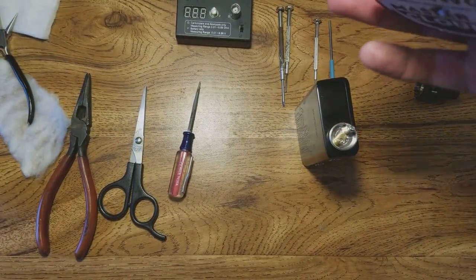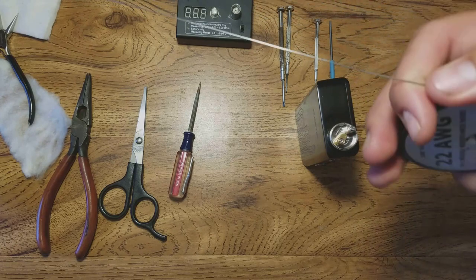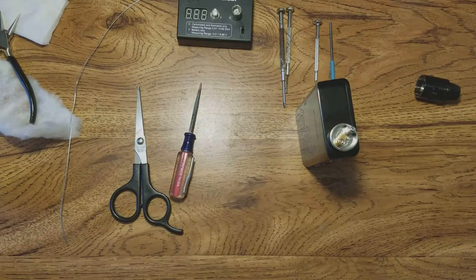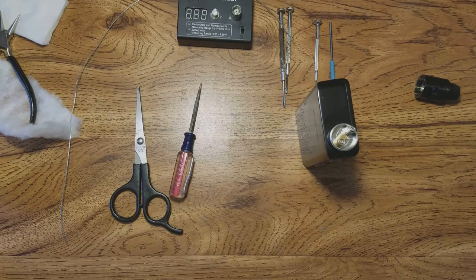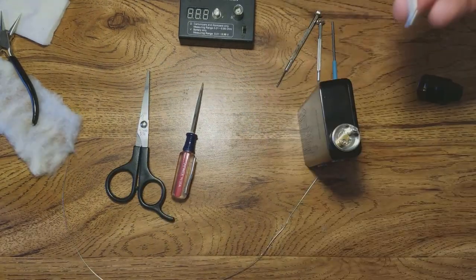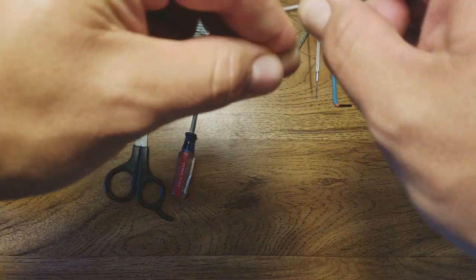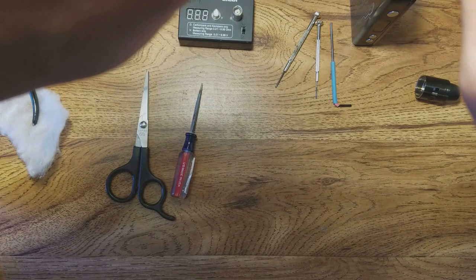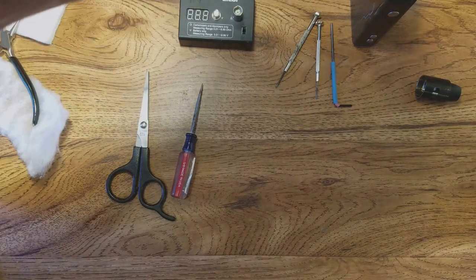All right, let's get on to this 22 gauge kanthal. Master of Clouds, love this stuff. I've had it quite a long time now, probably two years, and I've still got a full spool of it. You get yourself about a foot. I usually go about a foot to make two coils at eight wraps, just so you have room to work with your wire. I usually want to wrap it on, I don't know what size screwdriver this is, but this is what size I use. Let's wrap this motherfucker. Eight wraps: one, two, three, four, five, six, seven, eight.